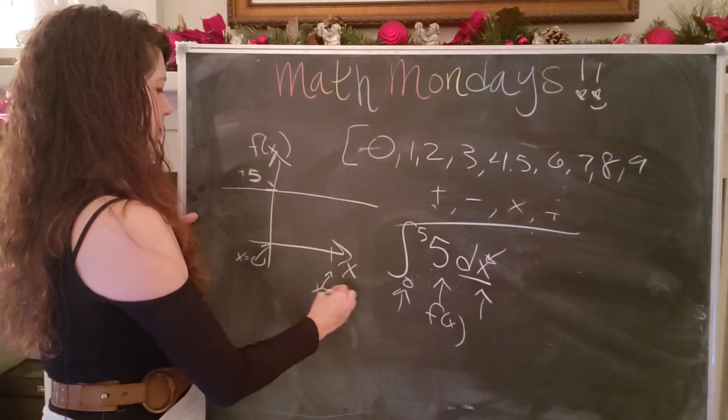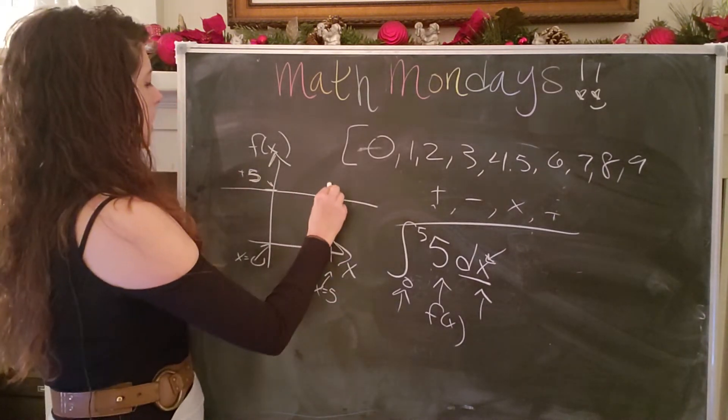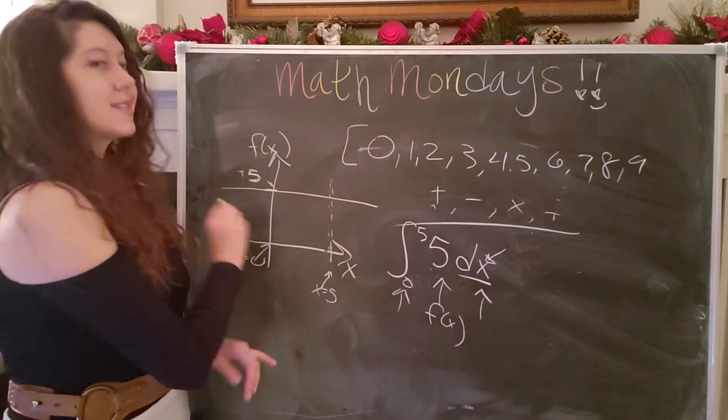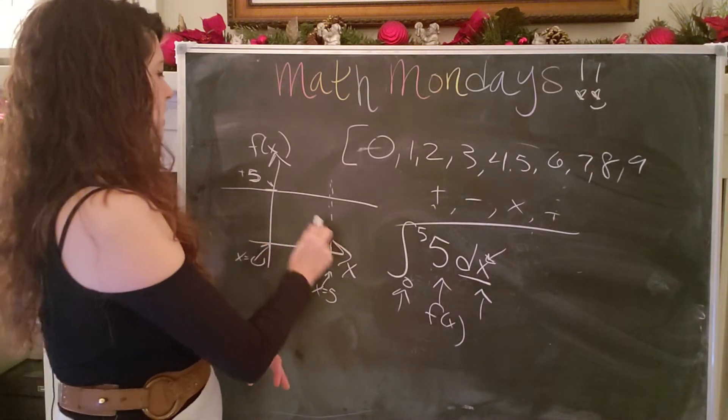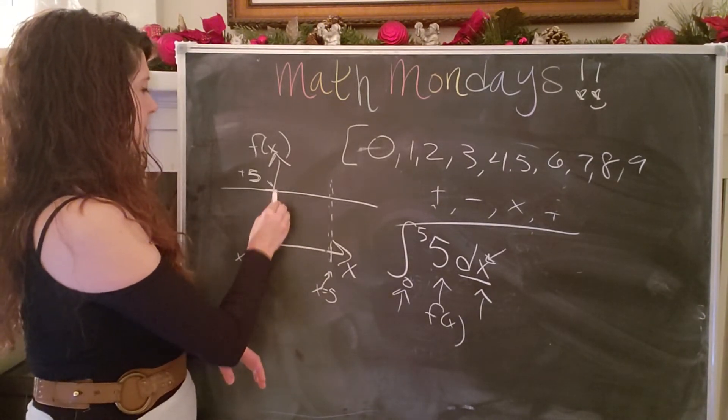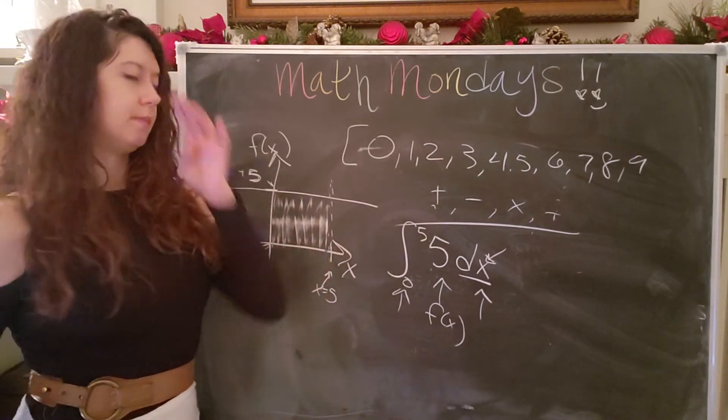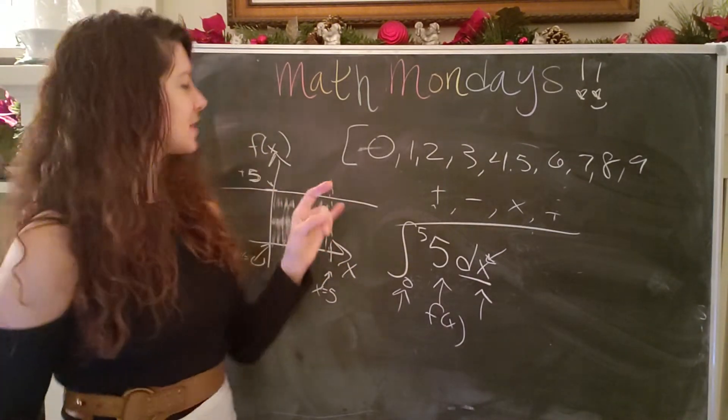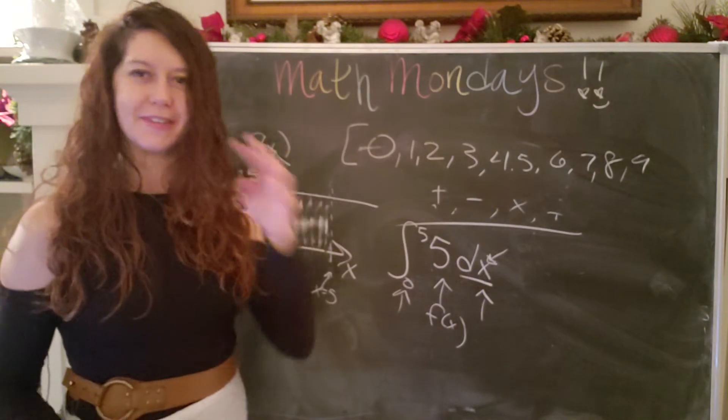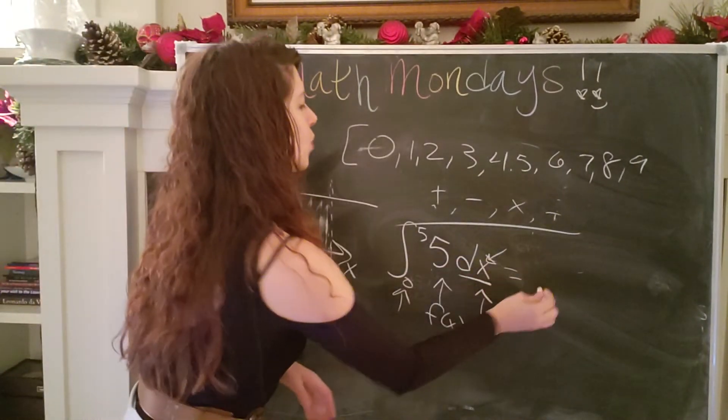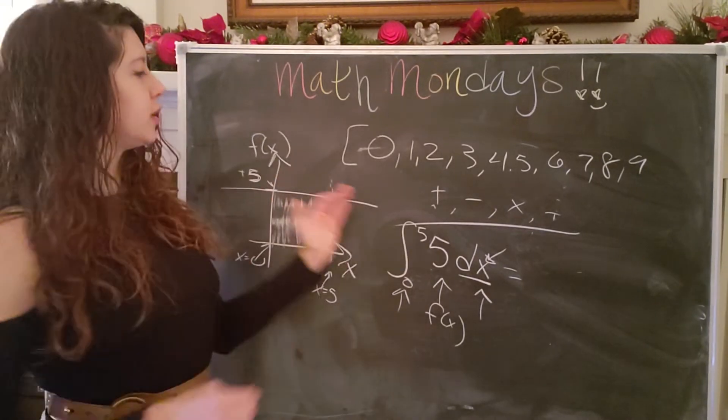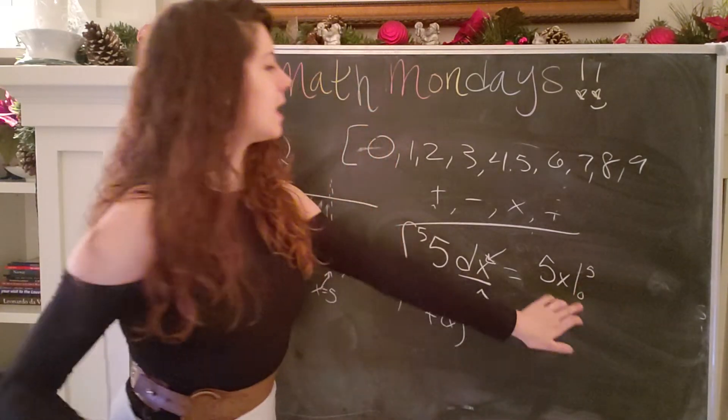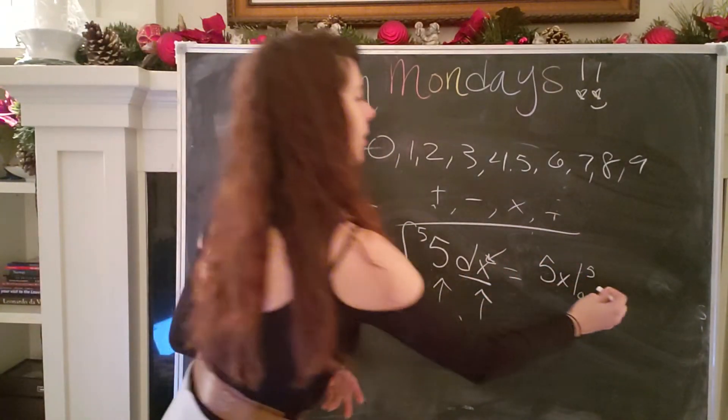So our definite integral is summing from x equals zero to x equals five, which basically means that we are taking the sum over this area. That's all an integral is. So for those of you that are like, wait a second, that's the area of a square or a rectangle. Yes, exactly. So we are going to use our knowledge of integrals to actually do this operation, which is going to give me five x from zero to five. And now we plug in our definite bounds or interval. So we have five times five minus five times zero, which is just 25. Look at that.